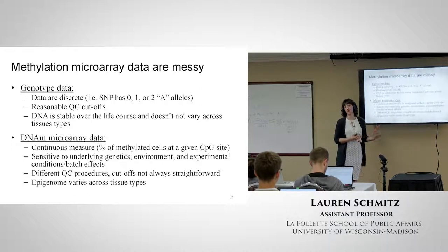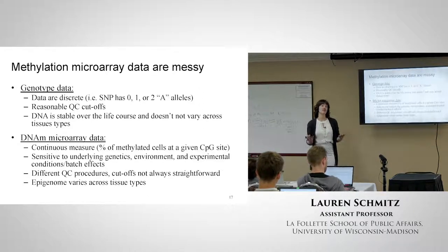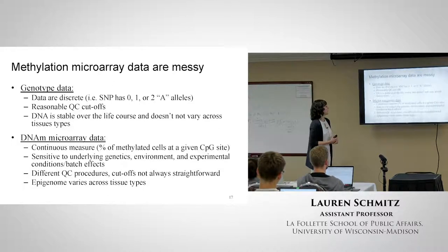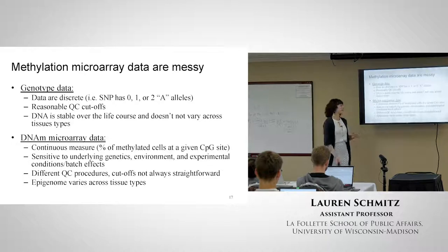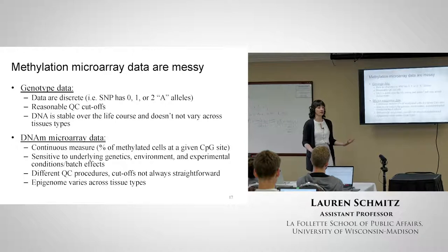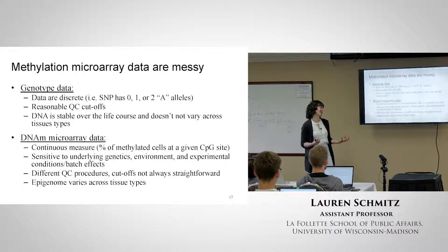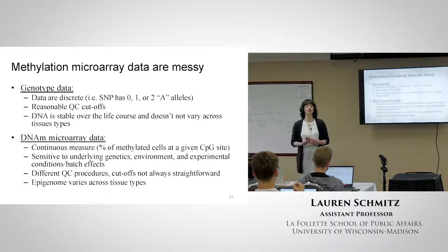QC procedures are totally different and the cutoffs are not always straightforward - they can really vary in terms of what people think is the right thing to do for QC across studies. And as mentioned, the epigenome varies across tissue types, so you really have to think: is blood a good proxy for what I'm looking at? For example, if you're interested in cognition, ideally you might want brain tissue, but you're not going to get brain tissue. So you have to think about whether using blood is going to be good enough for what you want to study.